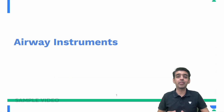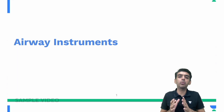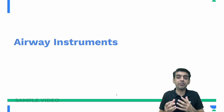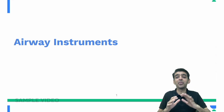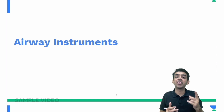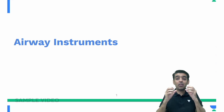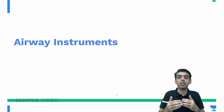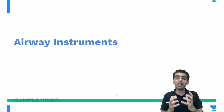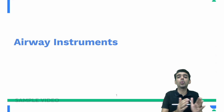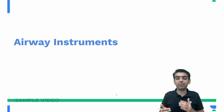Let us discuss the next topic, that is airway instruments. This is a very important topic because we will be discussing all the images used in anesthesia image-based questions. In this year's NEET PG, all the questions in anesthesia were image-based questions. The instruments we will be discussing are very specific to anesthesia and do not overlap with any other subjects.